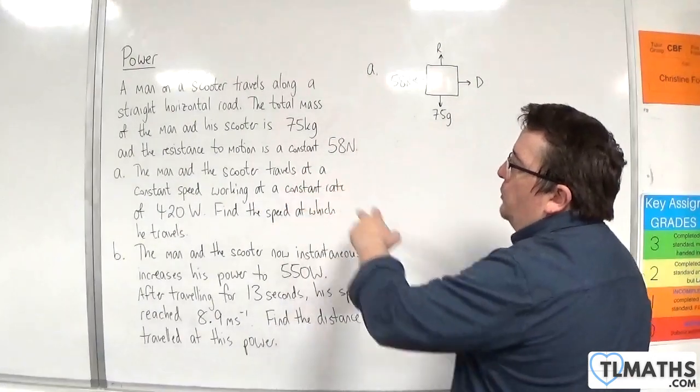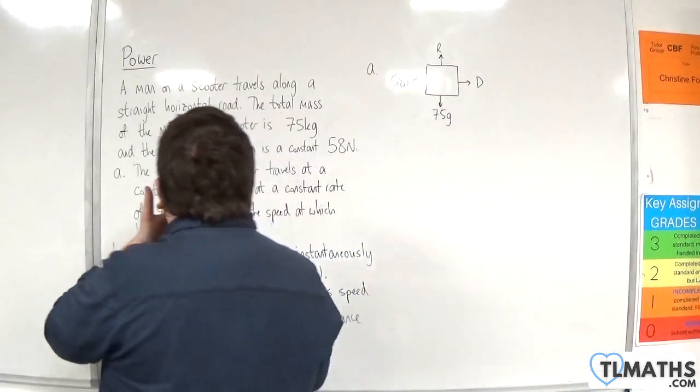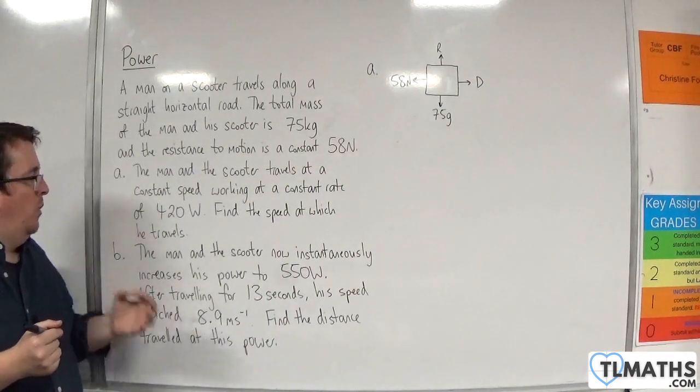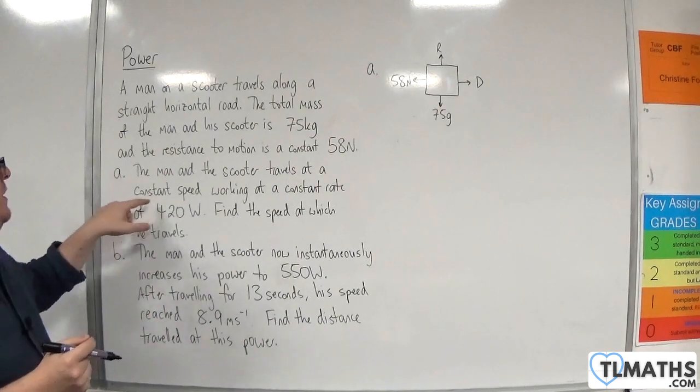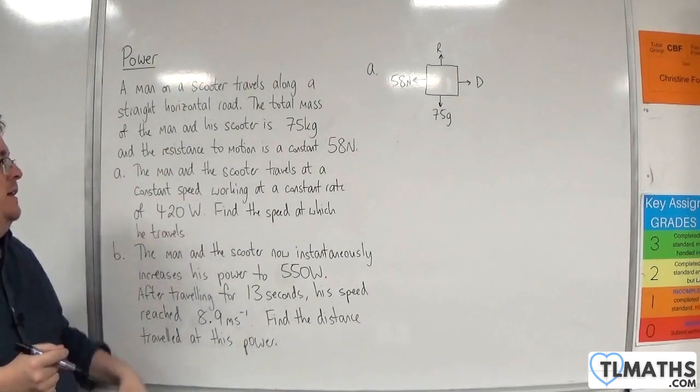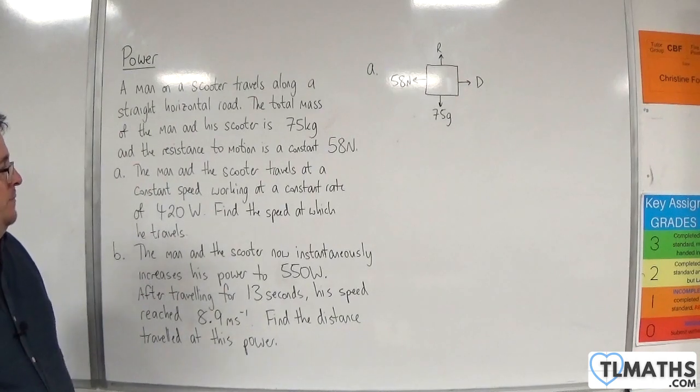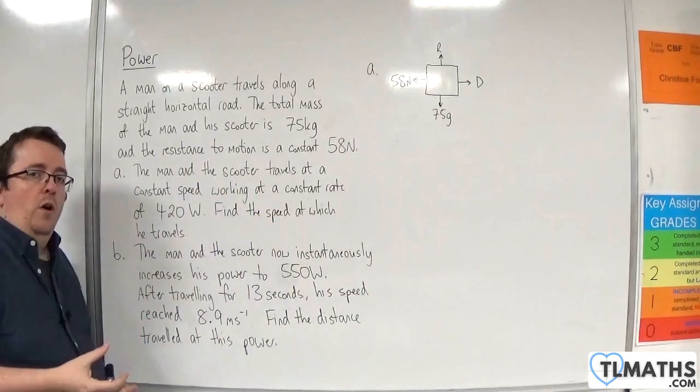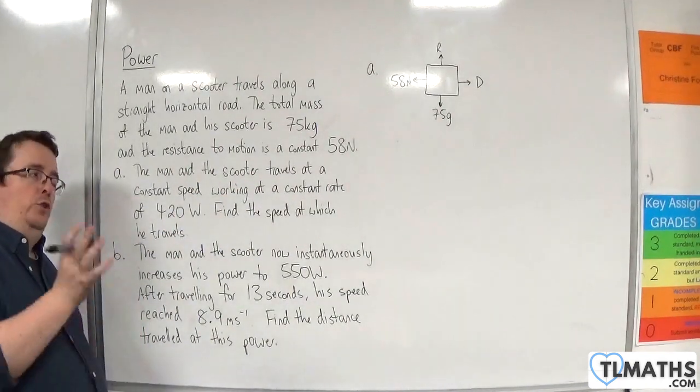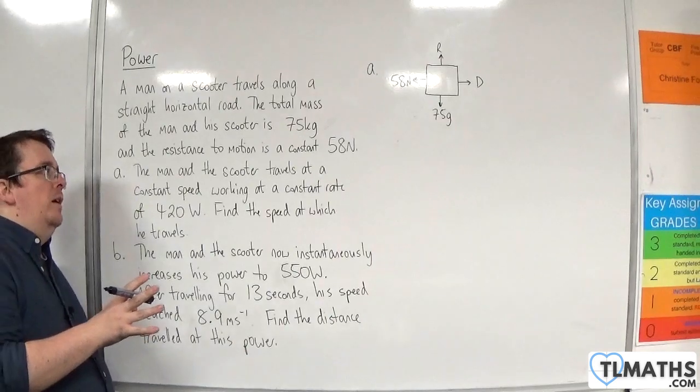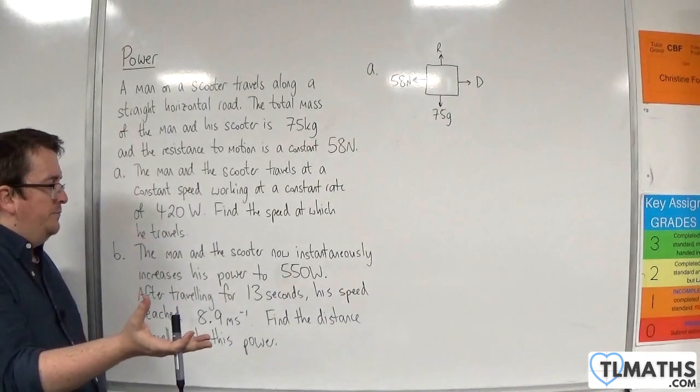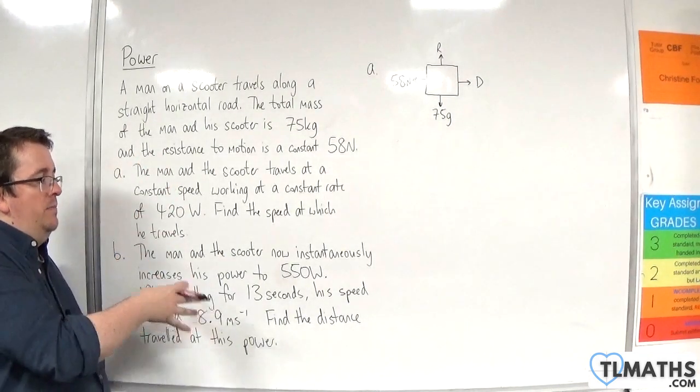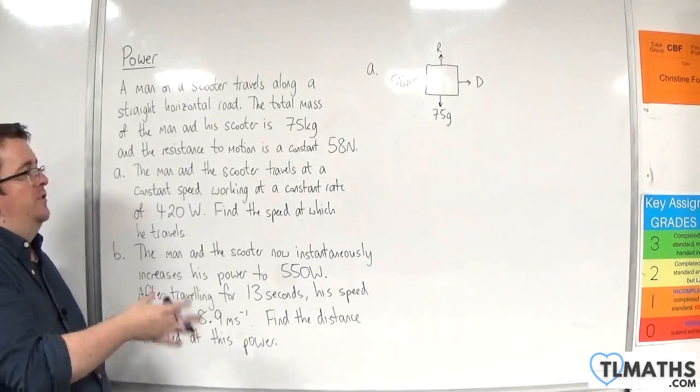Now, it says here the man on the scooter travels at a constant speed working at a constant rate of 420 watts. Because it's a constant speed, that means that the acceleration is zero. Because the acceleration is zero, you could work with SUVAT here. However, when we get to part B, you can't use SUVAT anymore.